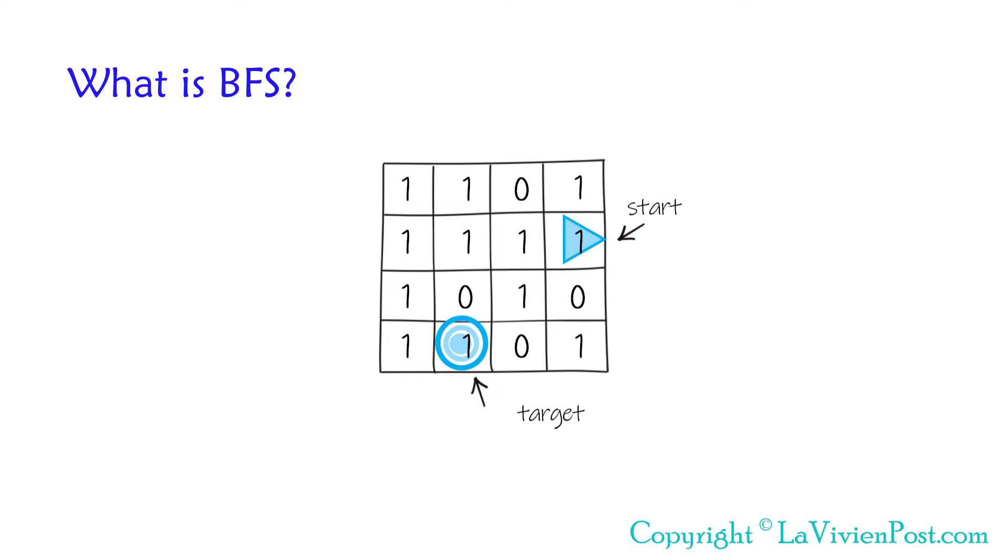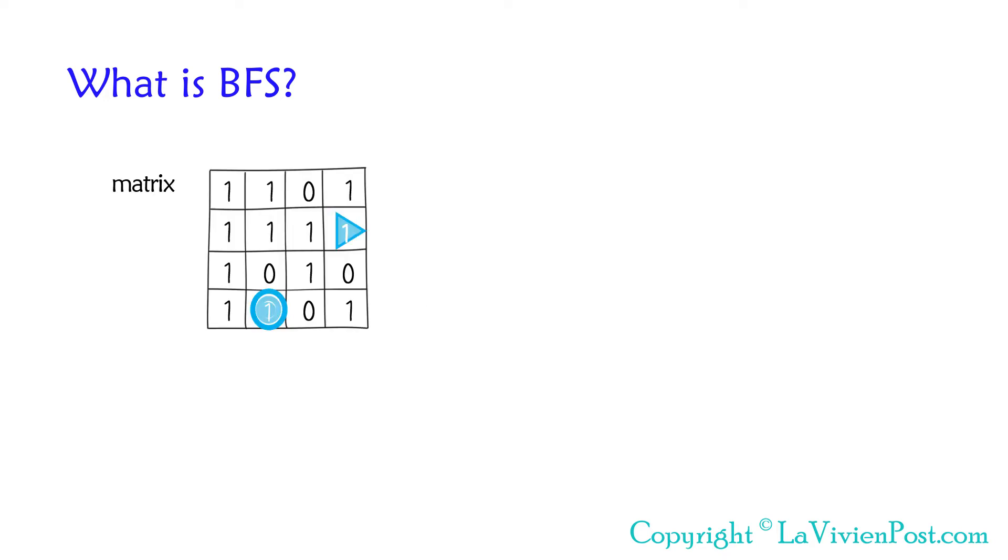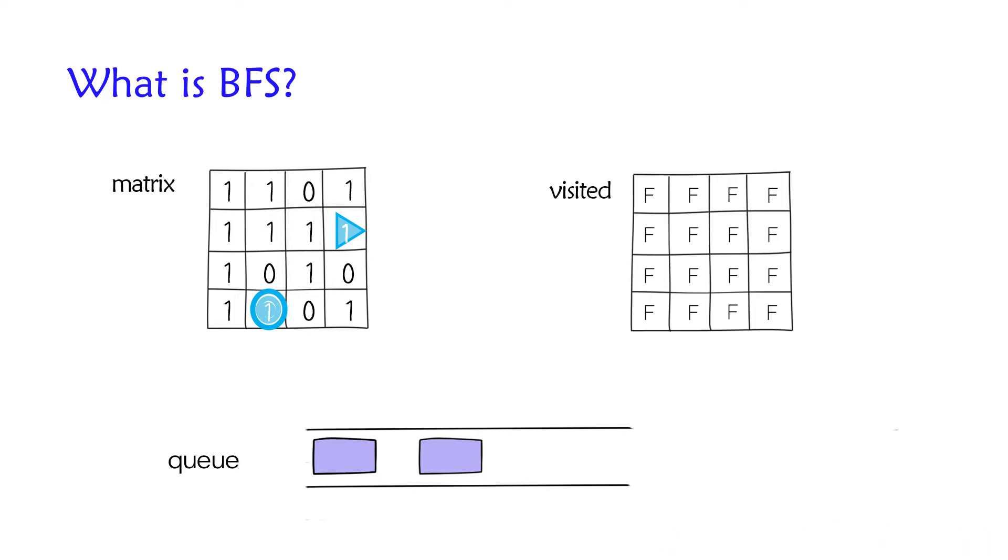BFS starts from the source node and traverses the graph level by level, meaning visit all the neighbor nodes prior to moving on to the next level nodes. Once the key or the destination is reached, we can stop. BFS will give the optimal solution. There are two things you need to pay attention to. BFS is often implemented with a queue. The queue decides the order of the cells to visit.